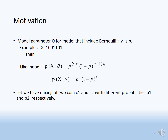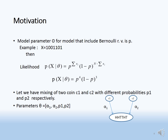Now consider a mixture of two coins, C1 and C2, with different probabilities p1 and p2 respectively. A string like HHTT can come from either coin C1 or C2 with probabilities alpha1 and alpha2 respectively. The model parameter theta = {alpha1, alpha2, p1, p2}. Can we find the probability of x given theta?